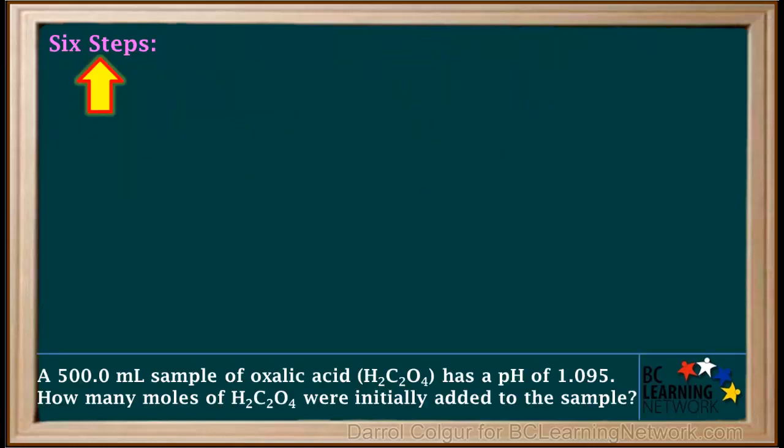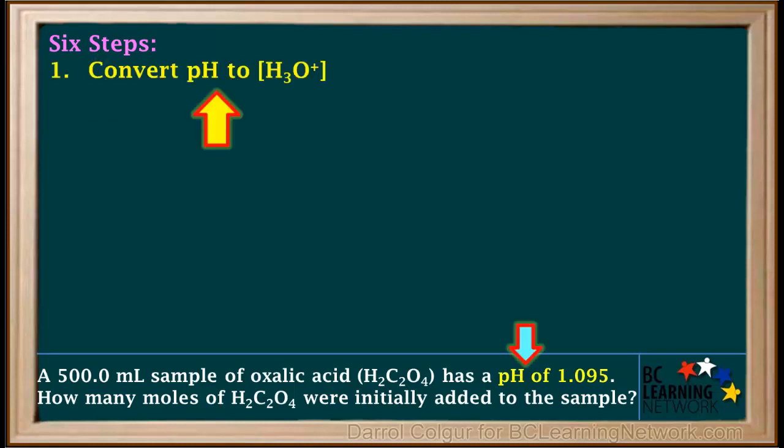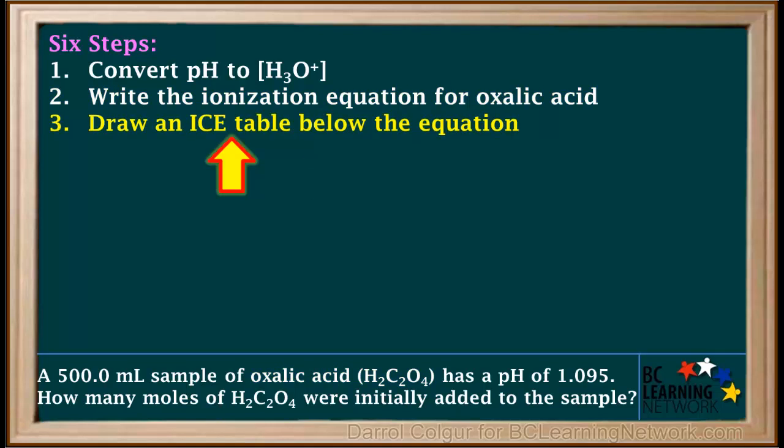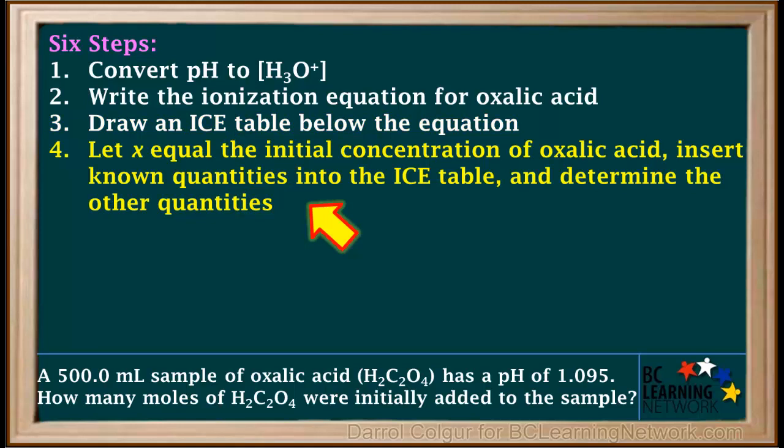We'll divide the solution to this problem into six main steps. We're given the pH, and since oxalic acid is a weak acid, we will need an ICE table. We can use hydronium ion concentration in an ICE table, but not pH. So step one is to convert the pH to hydronium ion concentration. In step two, we write the balanced ionization equation for oxalic acid. Next, we draw an ICE table below the equation. We let X equal the initial concentration of the acid.